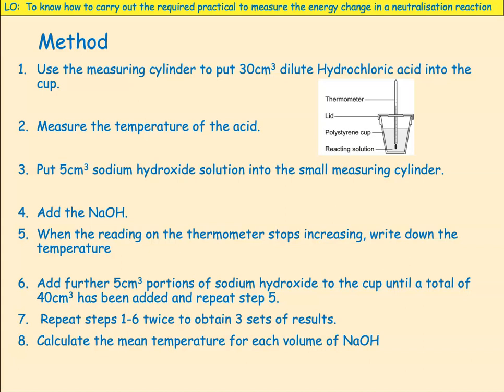The method — this is what you would need to write in an examination. Use a measuring cylinder to put 30 cm³ of dilute hydrochloric acid into the polystyrene cup. Take the temperature at the beginning — that's very important because we need to know our starting point. Then put 5 cm³ of sodium hydroxide solution into a small measuring cylinder.